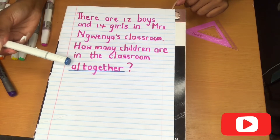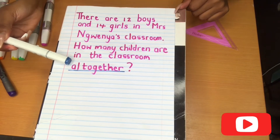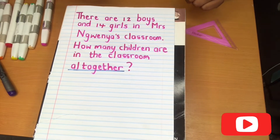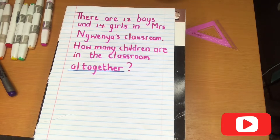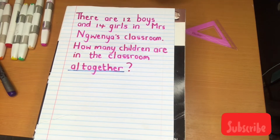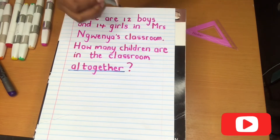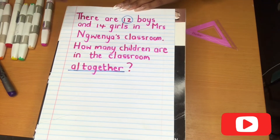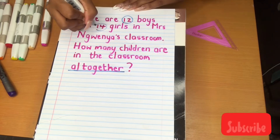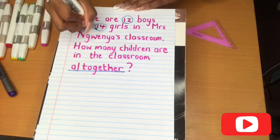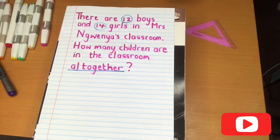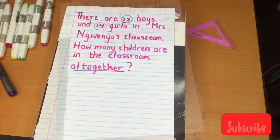Now we need to highlight the two numbers that we need to add together in order to find our final answer. These two numbers are 12 and 14 — these are the numbers we need to add together.